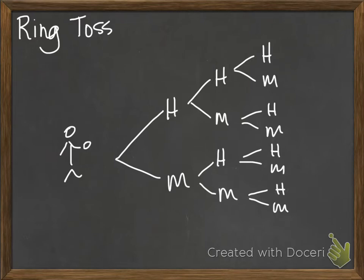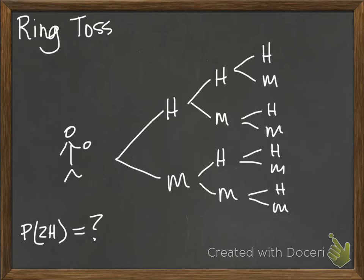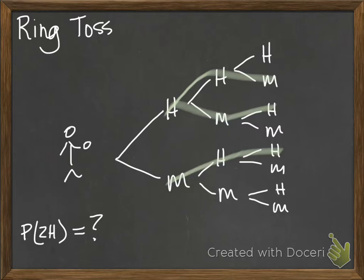Now if we want to know the probability of getting two hits out of three tosses, we look at the tree diagram. Only two hits — not three — so there are three possible outcomes that give us exactly two hits. Everything else has either three hits or two or three misses. So the probability would be three out of eight total.